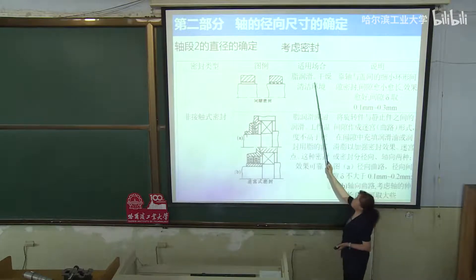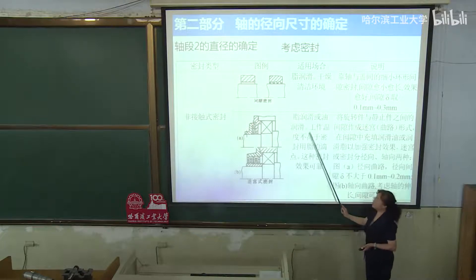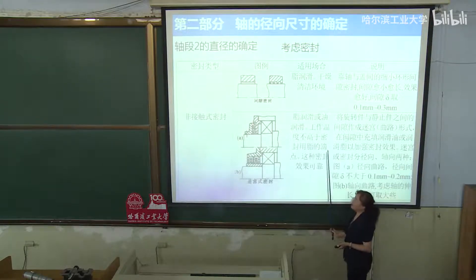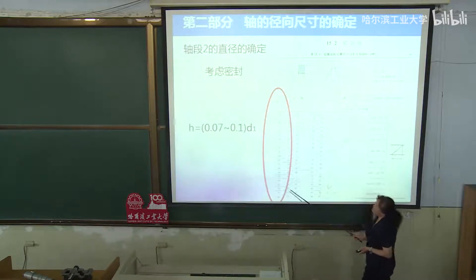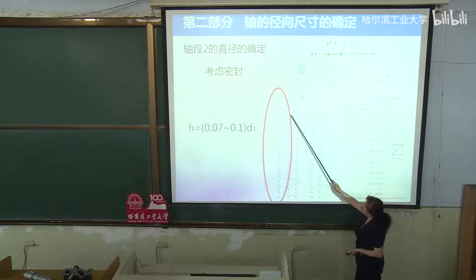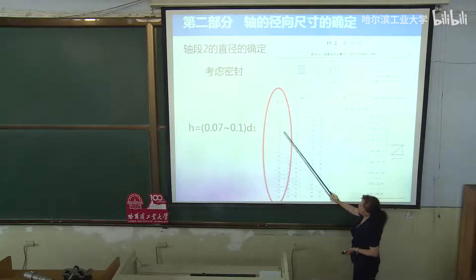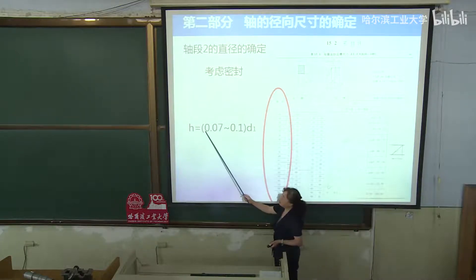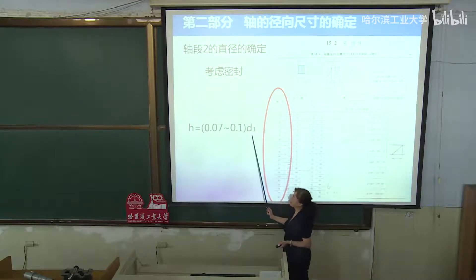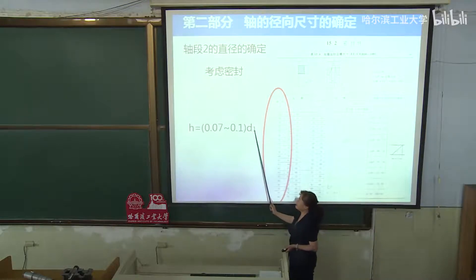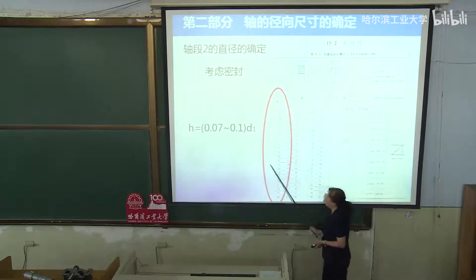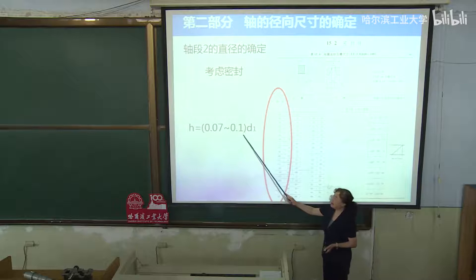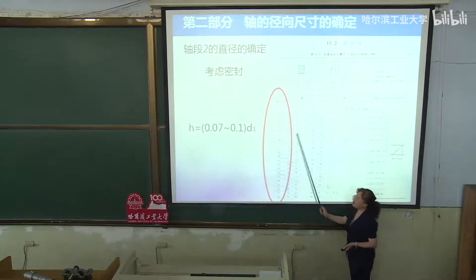唇形圈（皮碗密封）适用于有灰尘环境，线速度可在7米/秒以下，唇口可从内封油、从外封尘。非接触式密封有间隙密封和迷宫式密封。间隙密封用于脂润滑、干燥清洁环境；迷宫密封用于脂润滑或油润滑，工作温度不高于密封用脂的滴点。我们这道例题选的是毛毡圈密封，其轴径系列有16、18、20、21、25等。轴段二的直径要根据定位轴肩高度（0.07~0.1倍前段直径）计算，再到表中找最相配的值，综合确定轴段二的直径。